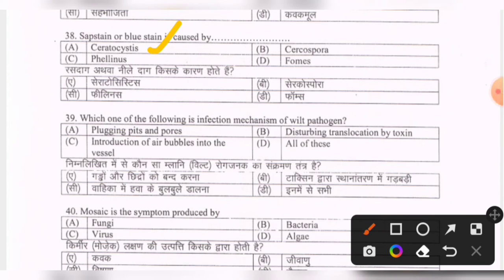Next question: which one of the following is the infection mechanism of wilt pathogen? Options are plugging pits and pores, disturbing translocation by toxin, introduction of air bubbles into the vessel, all of these. The correct option is all of these.